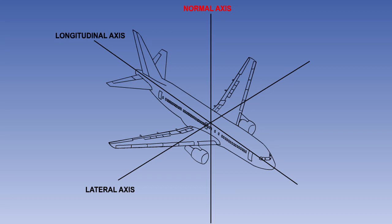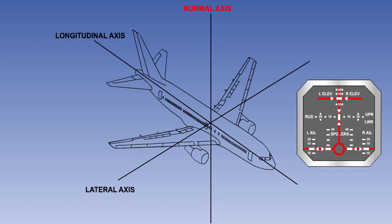In this lesson, we will discuss how an aircraft is controlled around its normal axis. We will also discuss the control position indicator, which is used to keep pilots informed of the position of their aircraft's flight controls.